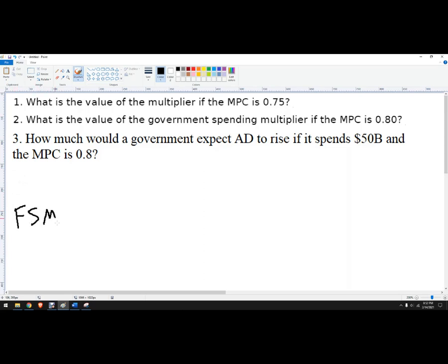So fiscal spending multiplier equals 1 over 1 minus MPC. And a faster way to do that is just 1 over the MPS, which is the inverse of the MPC.